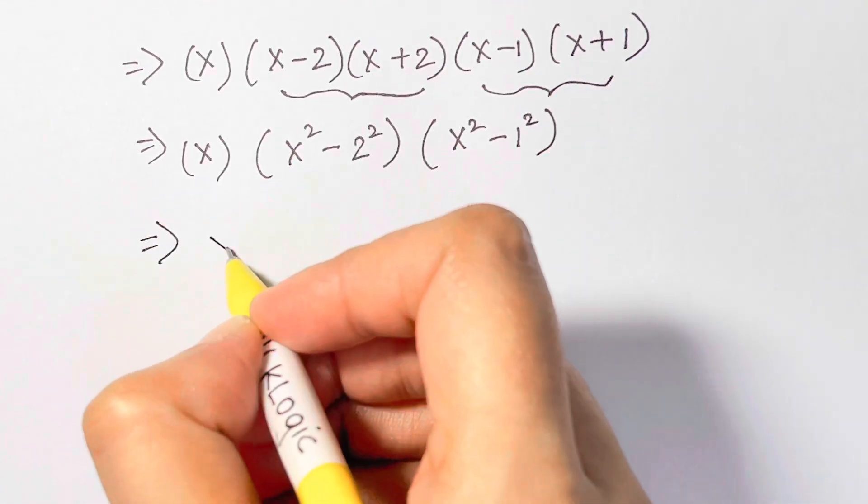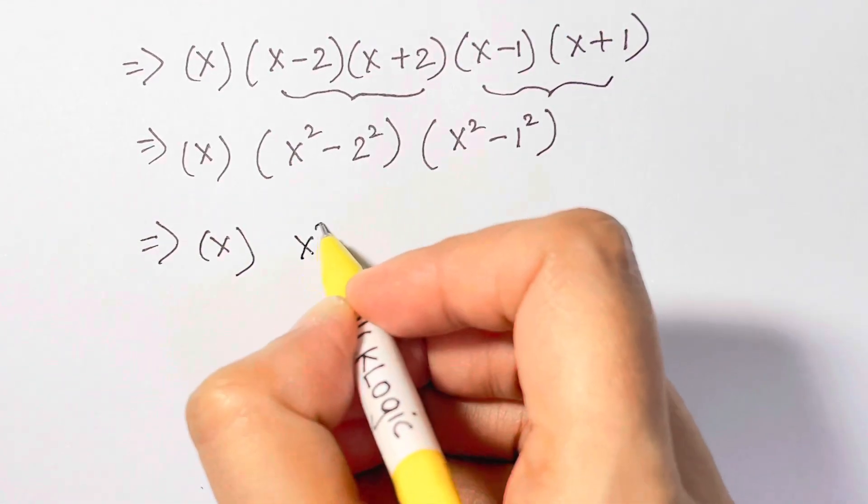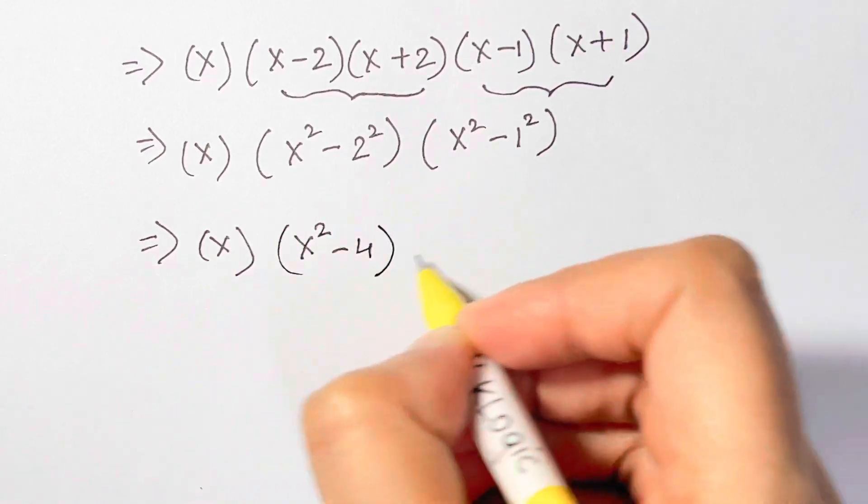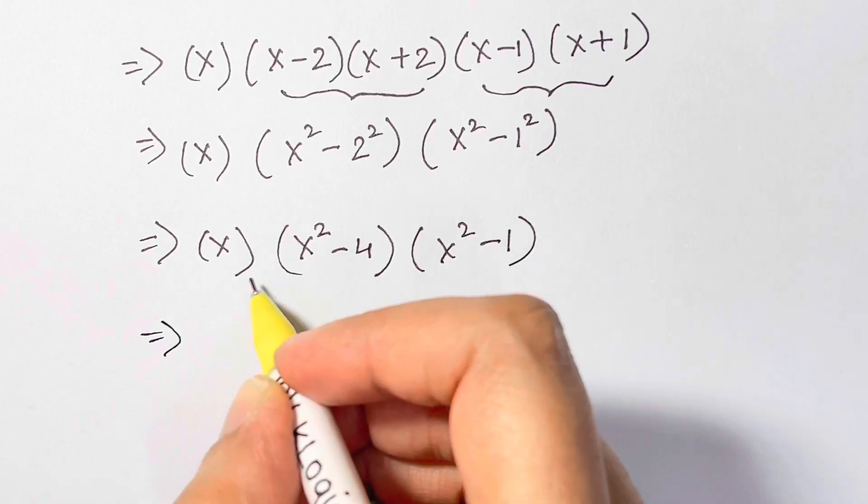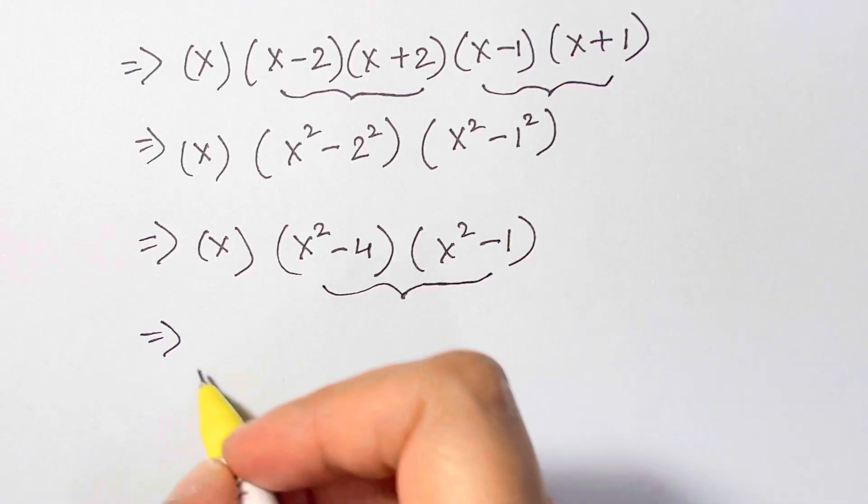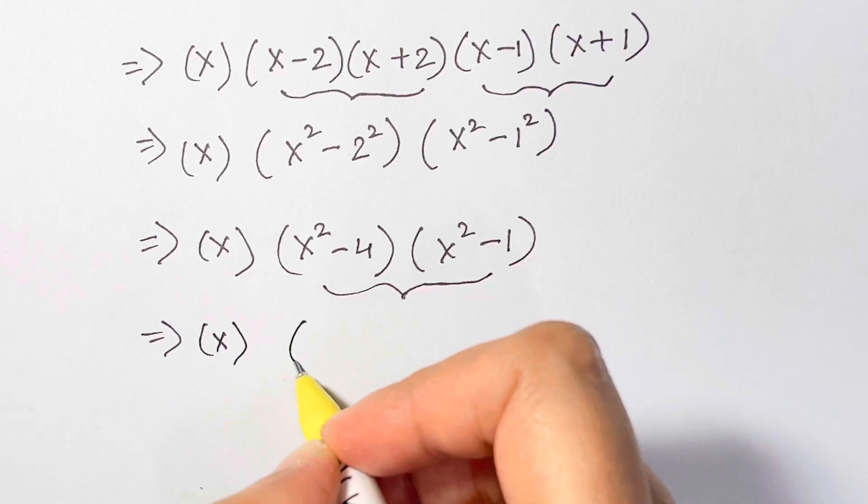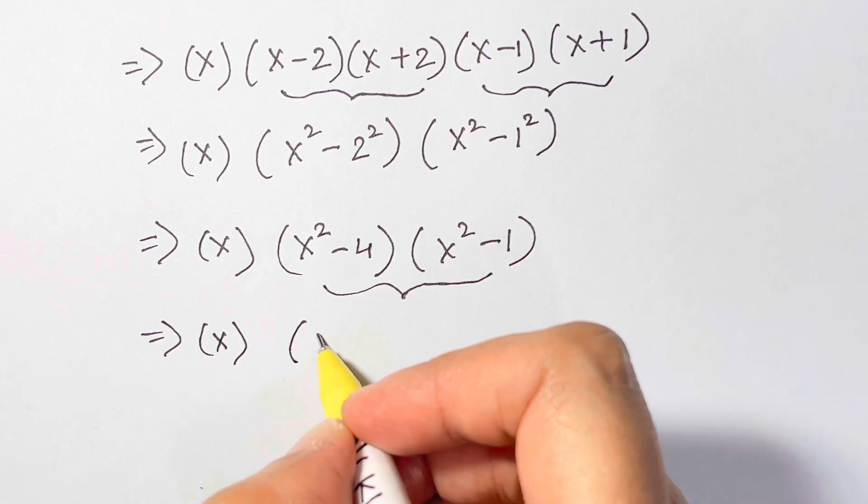Now what are we going to get? x times x times (x² - 4) and this is (x² - 1). Let's multiply them together using the FOIL method.